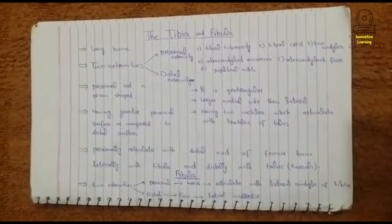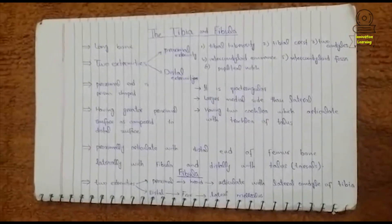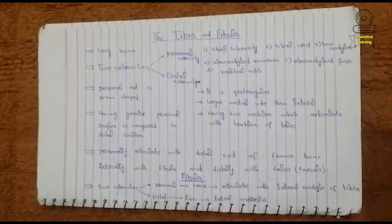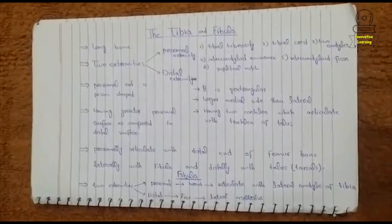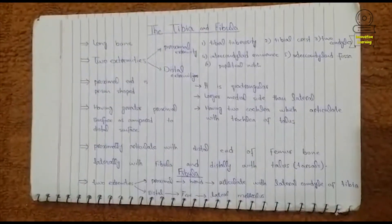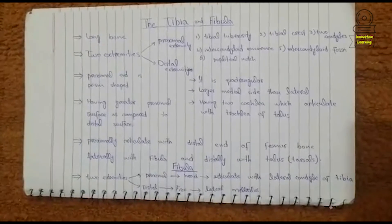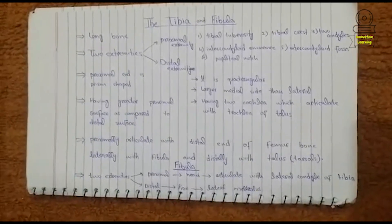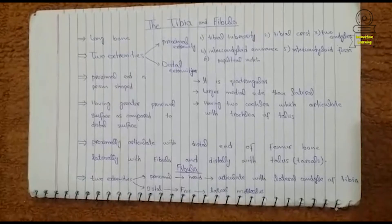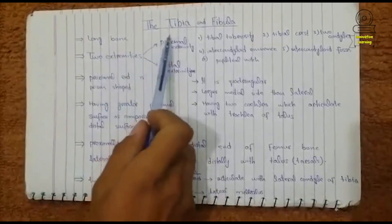Bismillahirrahmanirrahim, assalamualaikum. Today we will read about the tibia and fibula bone. The tibia and fibula bone are present in the hind limb of the skeleton. After the femur bone, the next bone is the tibia.